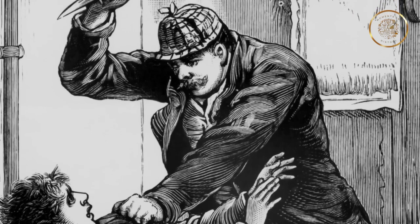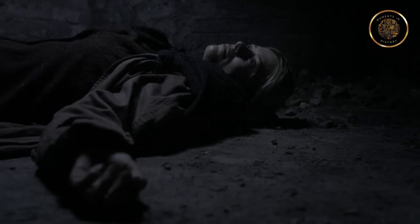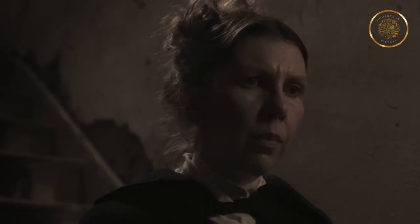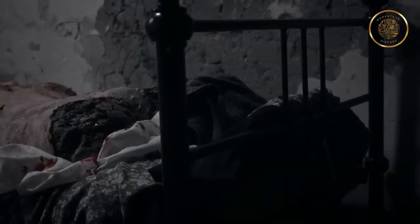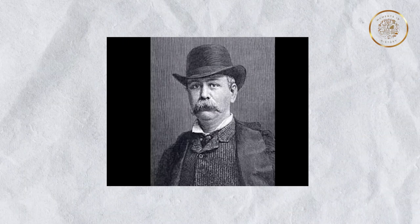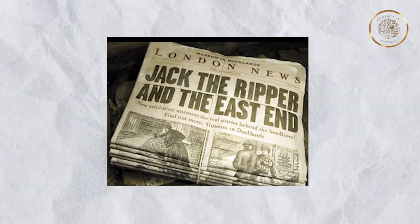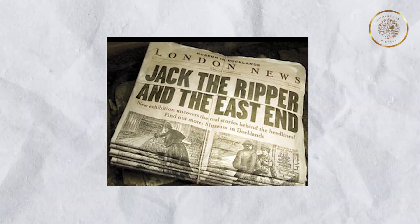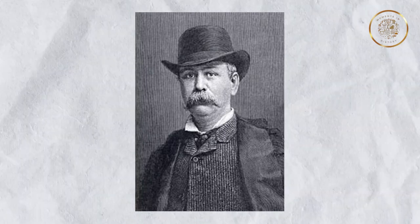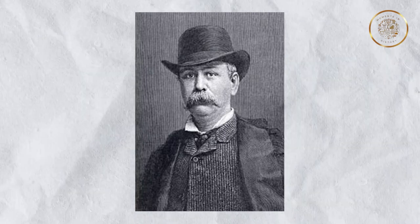Tumblety's alleged connection to the crimes rests on his misogynistic tendencies and the discovery of peculiar items in his possession, such as surgical instruments and women's clothing. Supporters argue that his medical knowledge, acquired through disreputable practices, could have enabled him to commit the anatomically precise mutilations that characterized the Ripper's modus operandi, while his deep-seated hatred towards women provides a possible motive. However, skeptics contend that his alleged involvement may be a result of mere speculation and circumstantial evidence, and his arrest and subsequent release without charges suggest a lack of substantive proof.